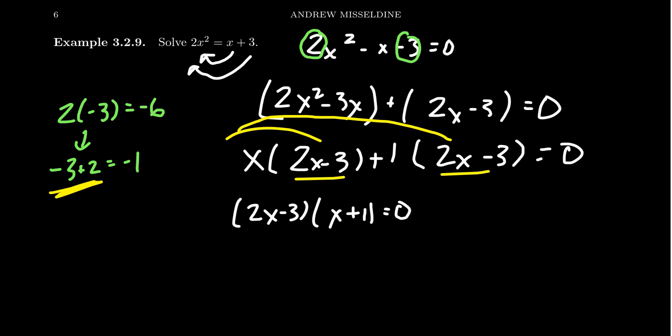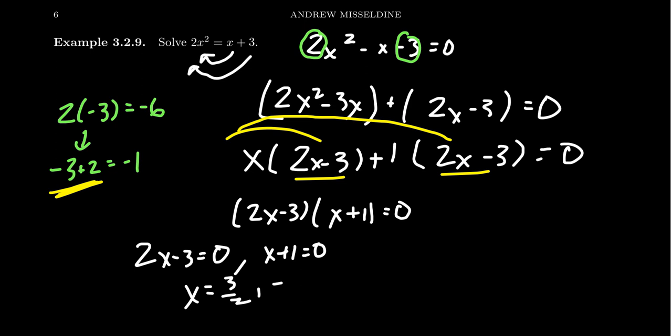And so then by the zero product property, we're going to get that two x minus three equals zero or x plus one equals zero. Solving these two linear equations — for the first one we add three and divide by two to get x equals three halves. For the second one, we subtract one on both sides to see that x equals negative one. And this gives us the solution. This idea of reverse FOILing — finding a magic pair and then using the factoring by groups technique — can help us factor many, many quadratic polynomials and solve many, many quadratic equations.